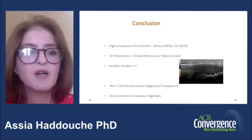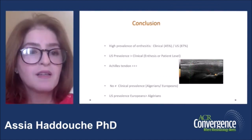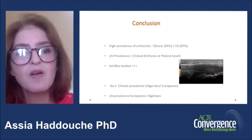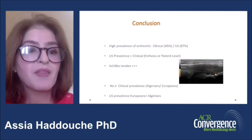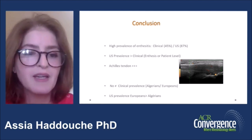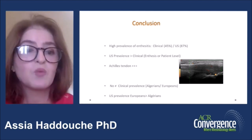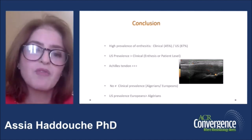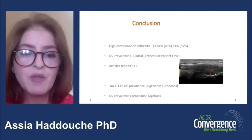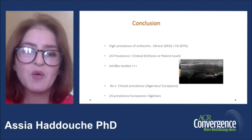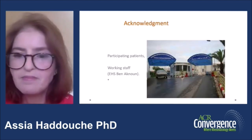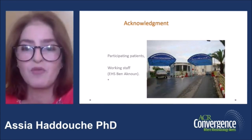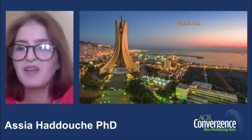In conclusion, we found a high prevalence of enthesitis on clinical and ultrasound exam — 45% versus 87% respectively. Ultrasound enthesitis was higher than clinical whether at the enthesis or patient level. The Achilles enthesis was the most affected site, and the Doppler signal was most detected there. No difference in clinical prevalence of enthesitis between Algerian and European cohorts was noted, but ultrasound prevalence was higher in the European study. I thank all patients who participated in the study, the working staff of our hospital, and I thank you for your attention.